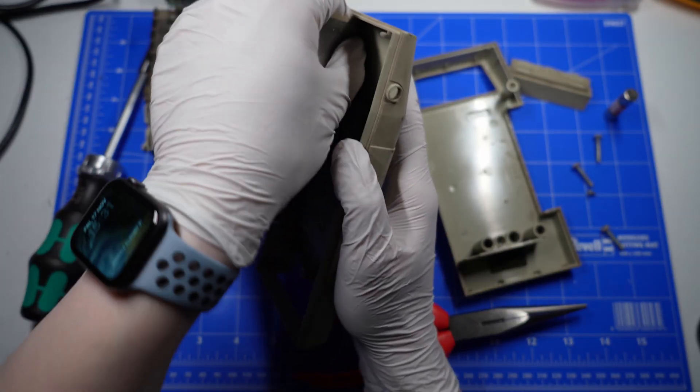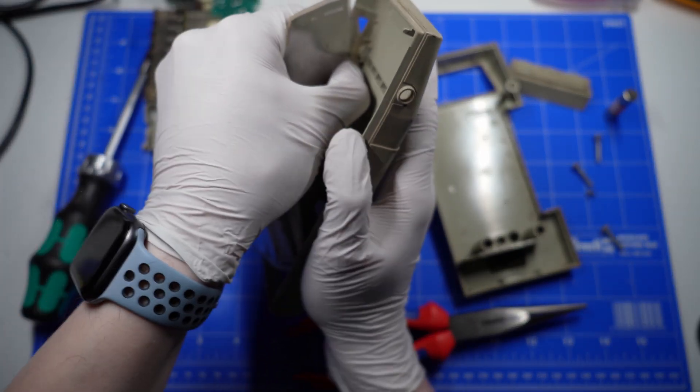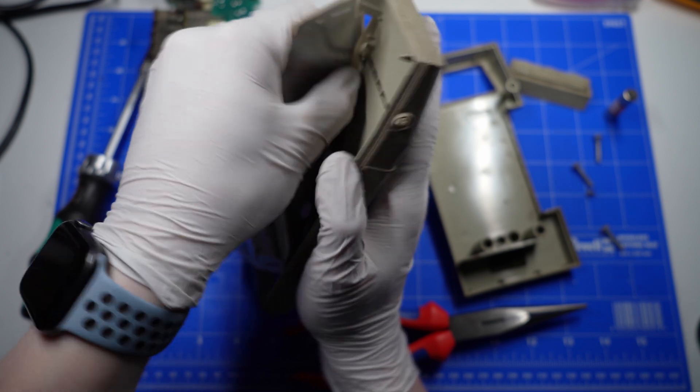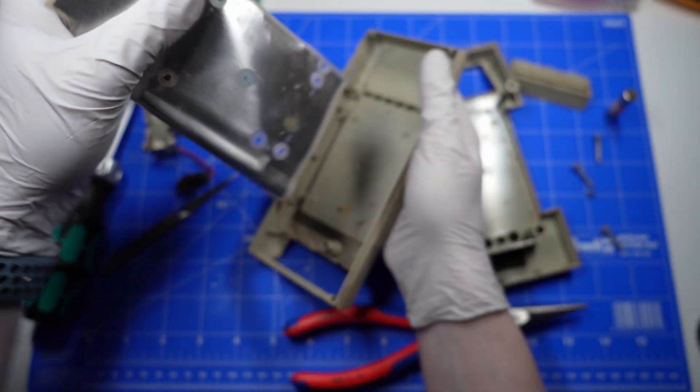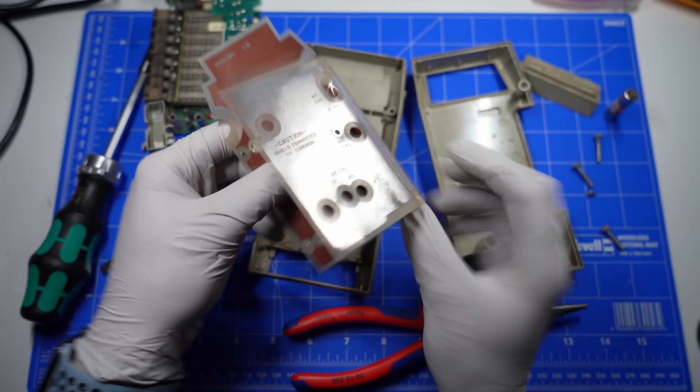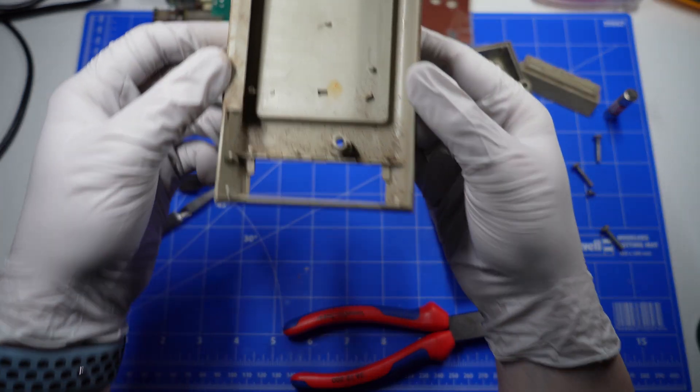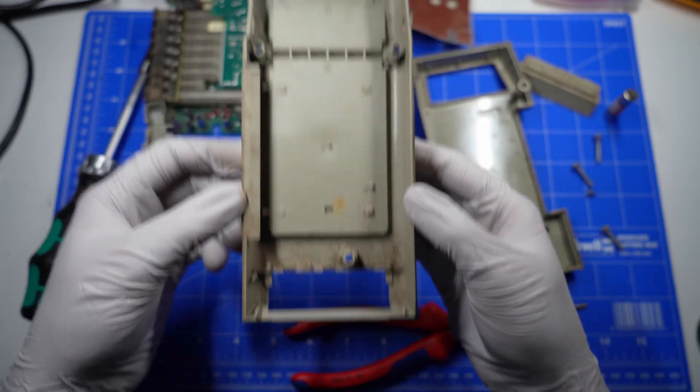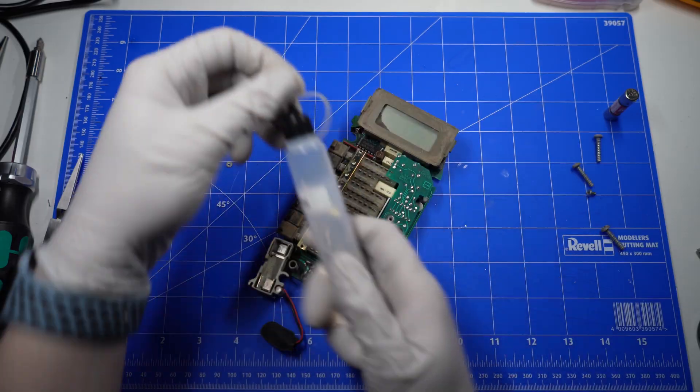Gonna have to remove the shield, and the only way to do so is to just rip it off. Trying to be careful so I don't rip it, but I should be able to get it back in later. Worst case scenario is I'll have to glue it back in. As you can see, tons and tons of dust everywhere.